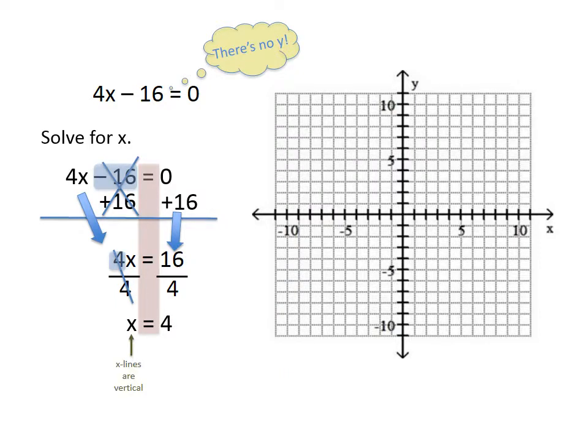Now, we did mention that x lines are vertical. That's something you can memorize. The other thing you can do with this is notice the 4. All points on this line will have an x coordinate of 4. If x equals 4, all the points on the line have an x coordinate of 4.